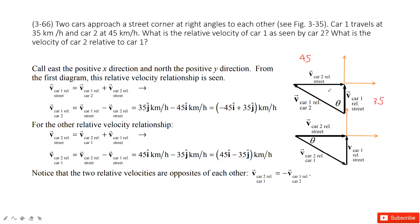If we draw a picture on a vector, we can consider this is the i-component and this is the j-component. Then we can write the vector for car one relative to the ground as 35j, and car two relative to the ground as 45i.